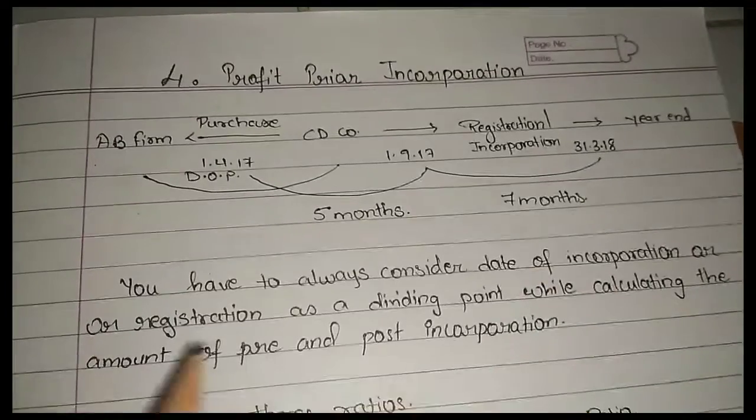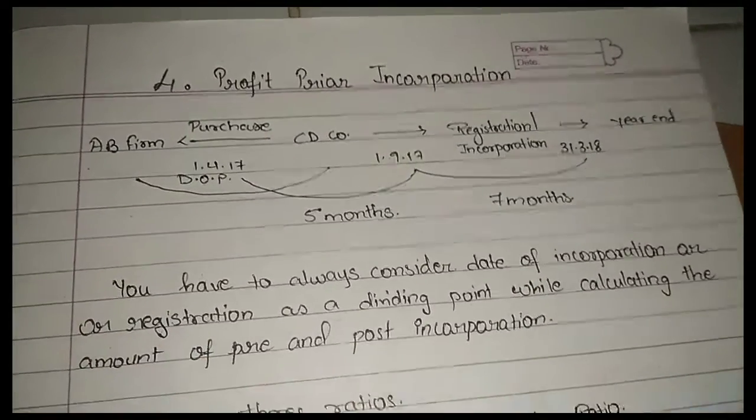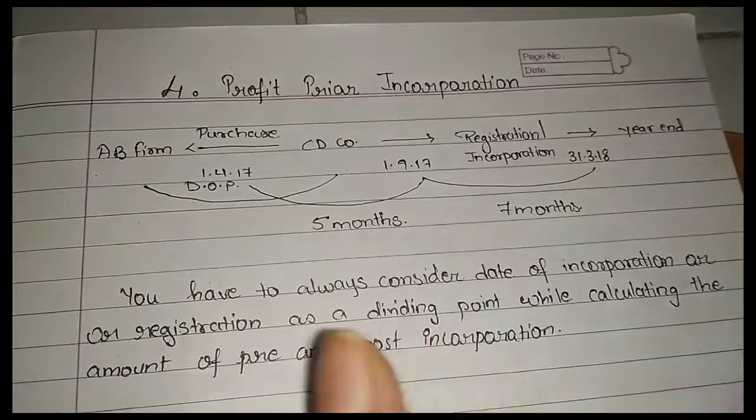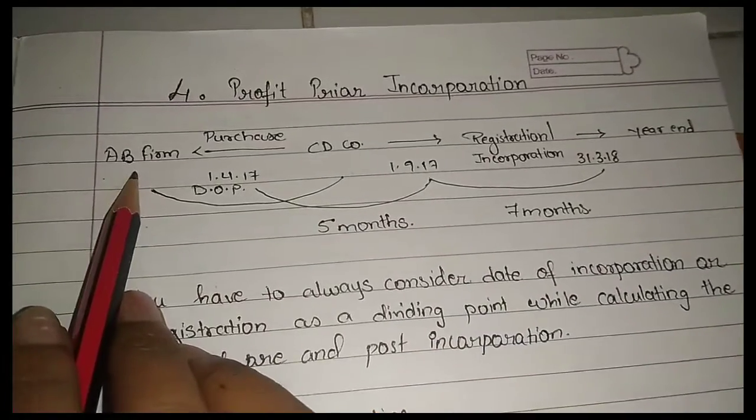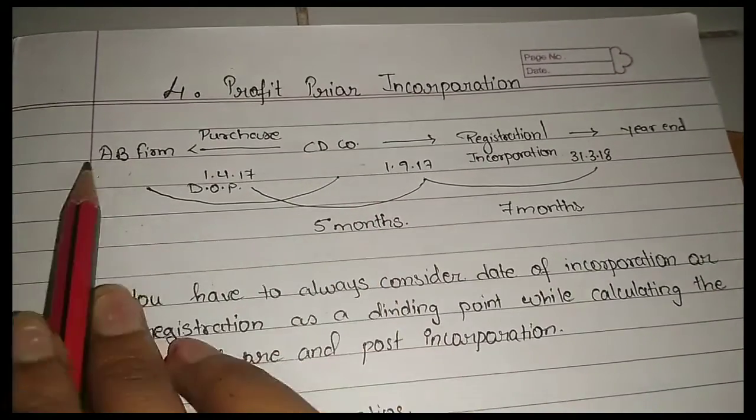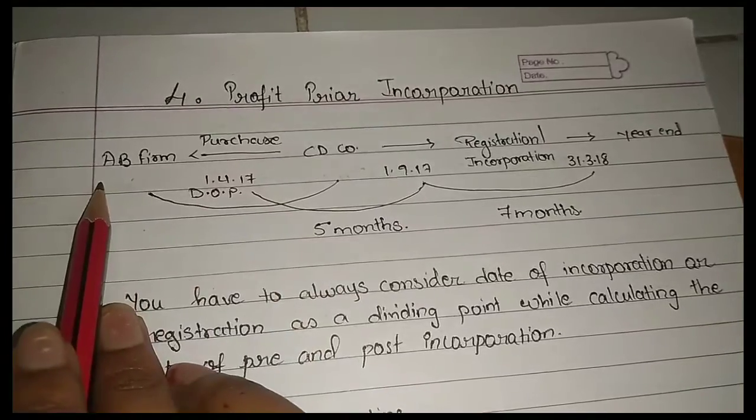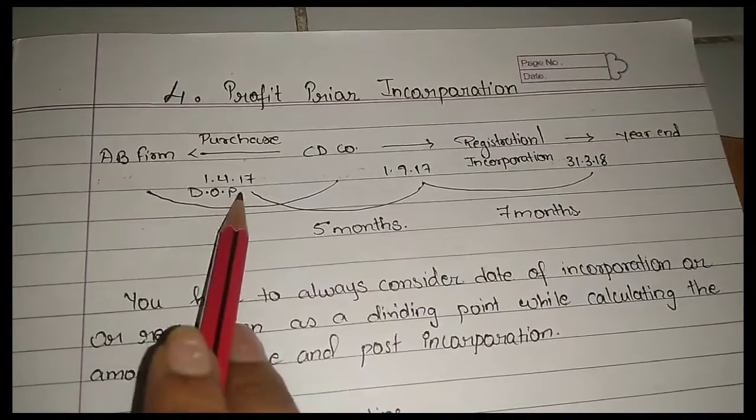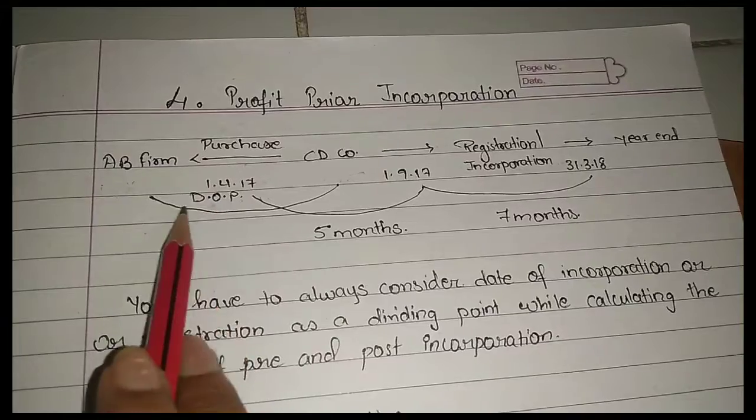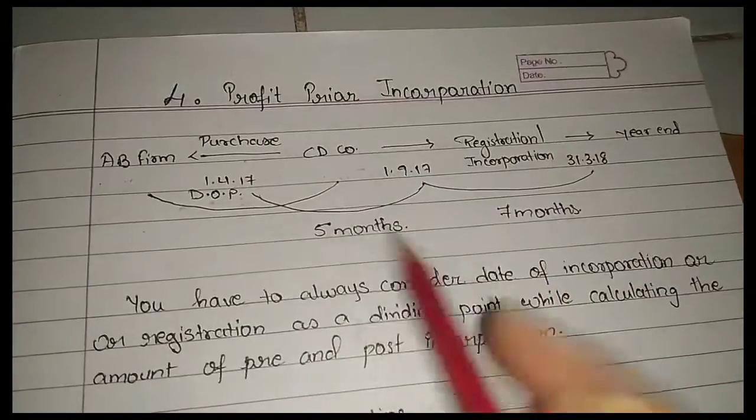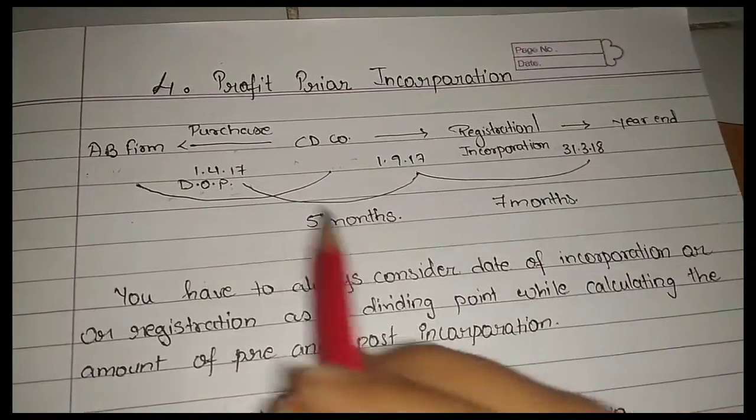Pre and Post Registration. For example, AB firm and CD company - AB firm purchases on first April fourth, date of purchase. This is one point.